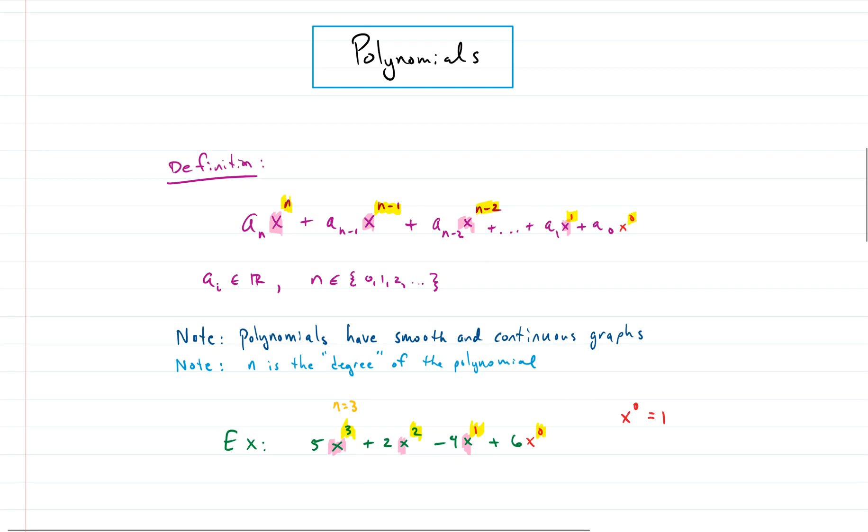So the exponents themselves, they can be 0, 1, 2, 3, and on up. They can't be negative. They can't be fractional. They can only be 0, 1, 2, 3, and on up.